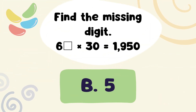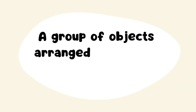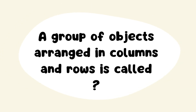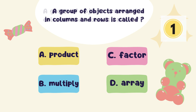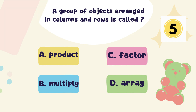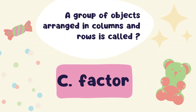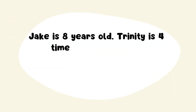Next Question: Find the missing digit. Answer: Option B. 5. Next Question: A group of objects arranged in columns and rows is called? Answer: Option C. Factor.